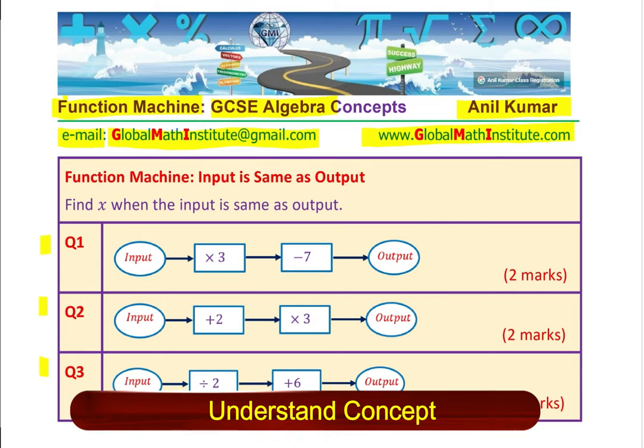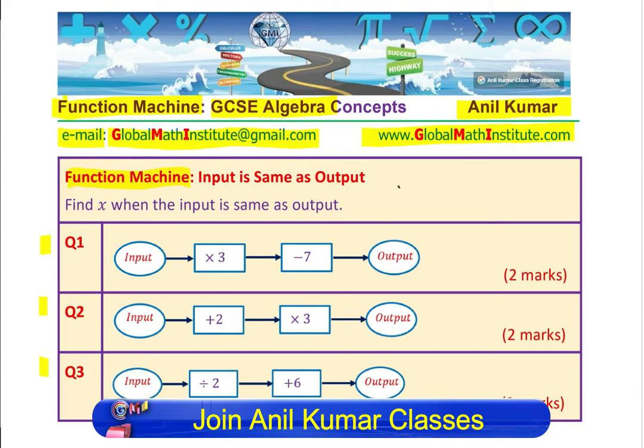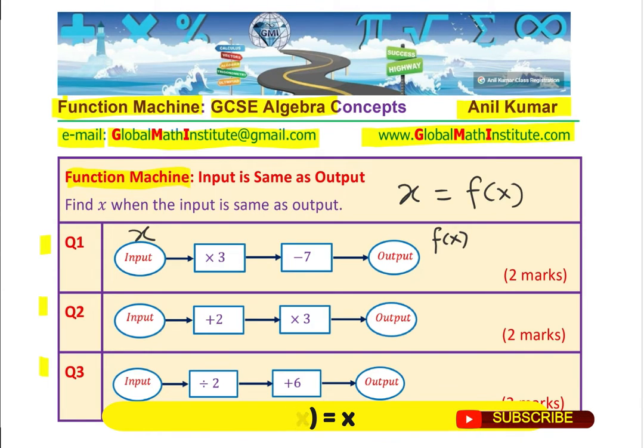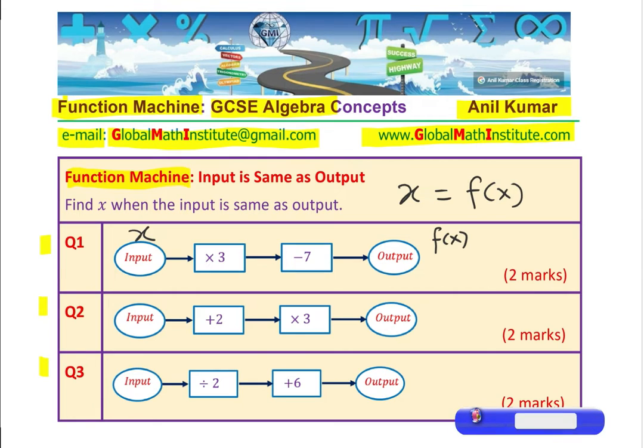Now, let us see how do we solve such questions. We need to find the value of x which is the input when the input is same as output. That means both input and output are same. In function machine, we could say in function notation, x is equal to f of x. That is the condition. There are three different questions. If the input is x in the first one times 3 minus 7, we get some output which is f of x. We want input and output to be same. So basically, you get an equation which needs to be solved. It is not that difficult. It looked difficult earlier. The first thing is to understand the question and then solve it.